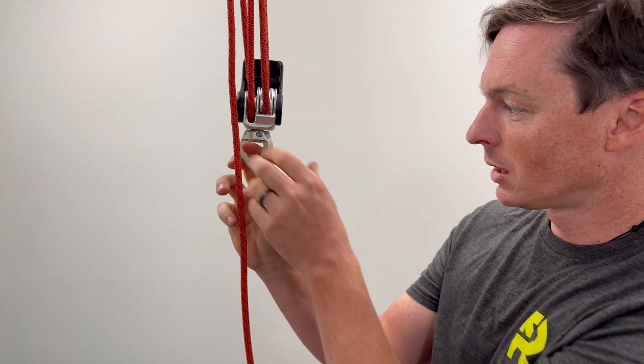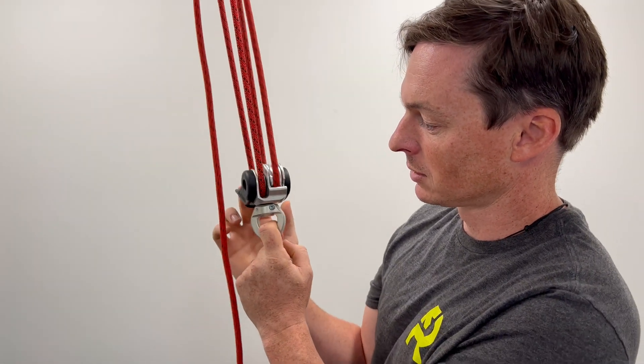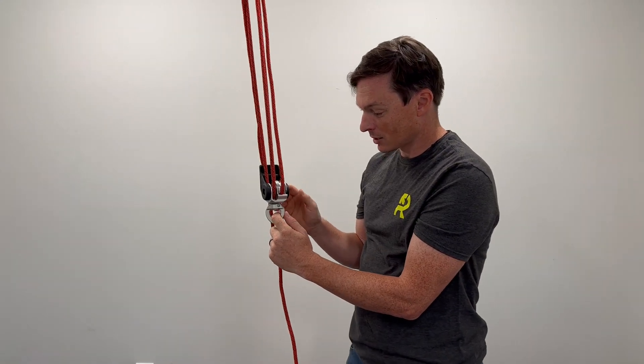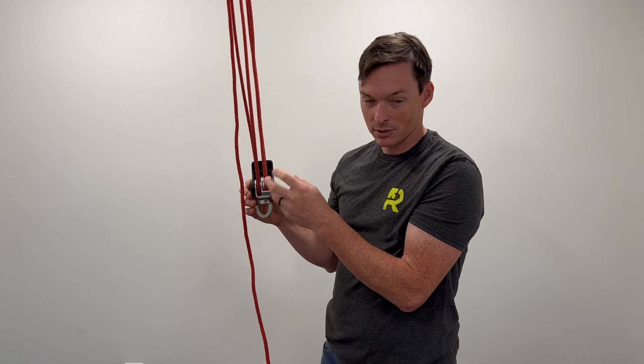To come down, it's super easy—just pull the lever and let it back out. Compared to the Aztec, it's much simpler. You don't have to mess around with soft prussics, and you don't get that setback waiting for those prussics to engage and bite.